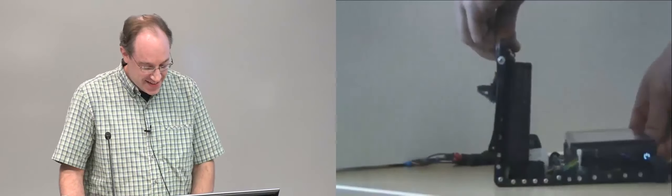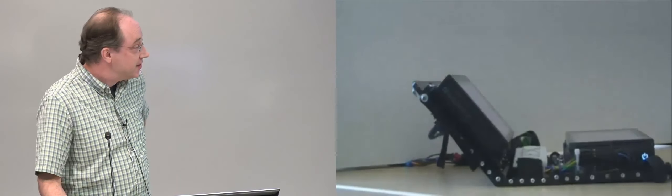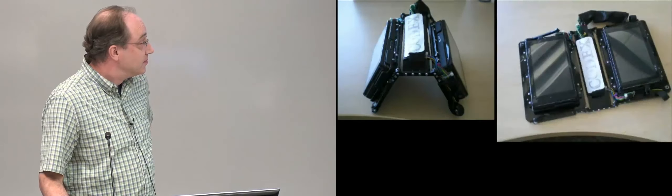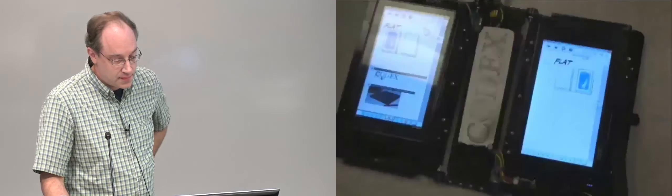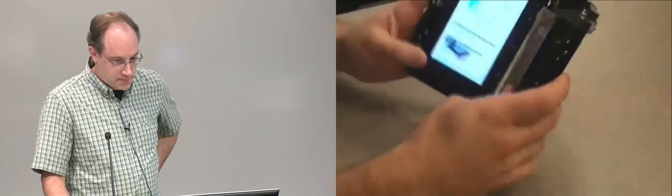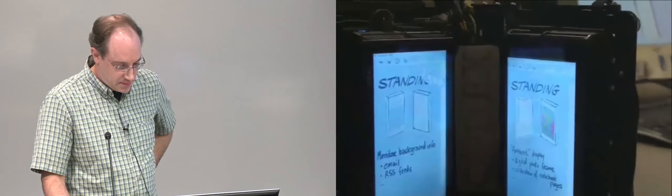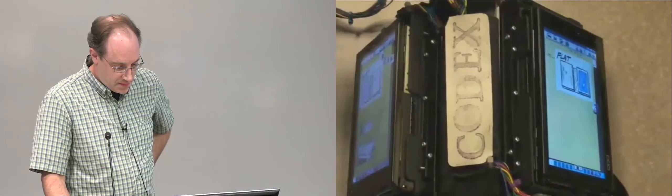The Codex is a prototype dual screen tablet computer. A custom detente hinge between the displays affords setting up the device in a variety of postures. Embedded sensors automatically adjust the displays and the software functionality to suit the resulting task context. Whether that means different arrangements for individual work, or postures that afford collaborating with another user.